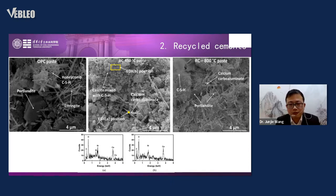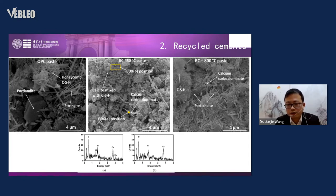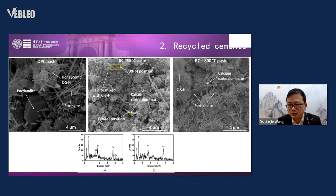Here we see SEM images of the microstructure of OPC paste and two types of recycled cement. In the OPC paste we can see portlandite, CSH, and calcium carboaluminate — that's where CO2 is fixed. The RC 800°C paste is much more porous than the RC 450°C recycled cement paste.